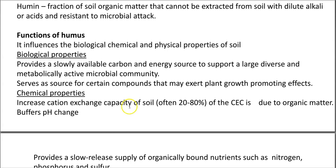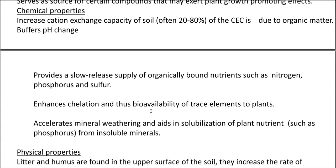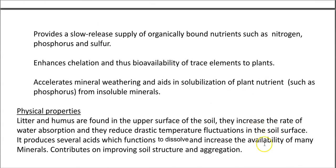Regarding chemical properties, humus increases the cation exchange capacity (CEC) from 20 to 80%. It buffers pH changes, provides a slow release of organically bound nutrients such as nitrogen, phosphorus and sulfur, enhances chelation and bioavailability of trace elements, and accelerates mineral weathering, aiding solubilization of phosphorus from insoluble minerals.